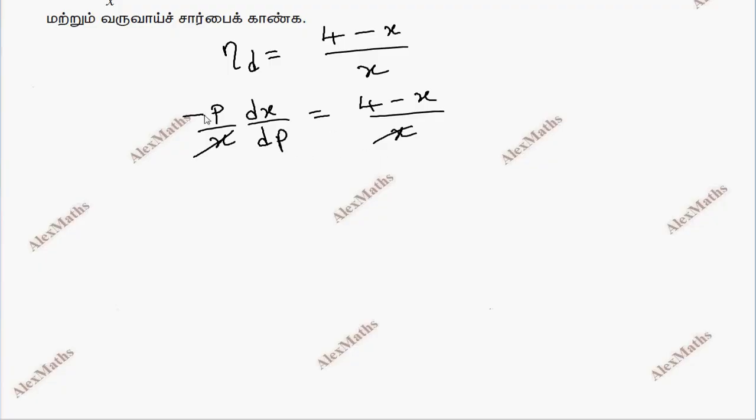We have dx by (4 minus x) is equal to minus dp by p. Rearranging, dp by p equals dx by (x minus 4).